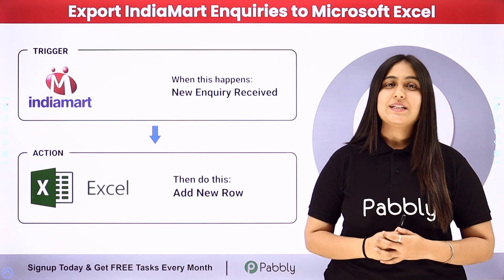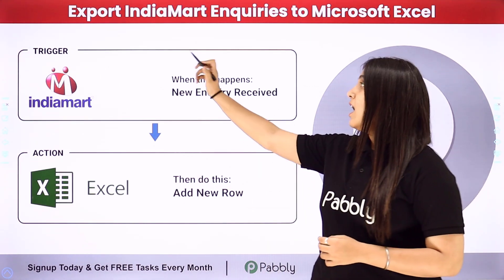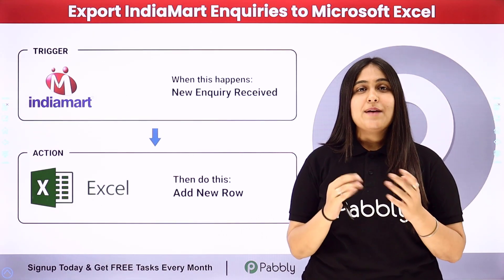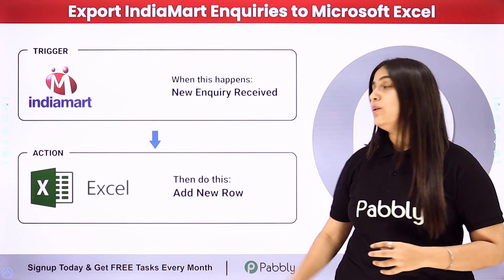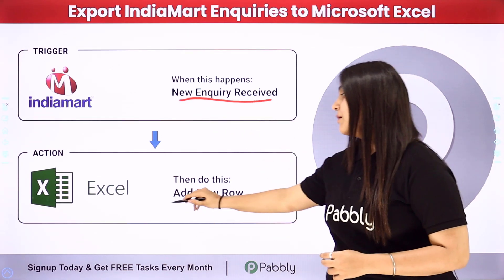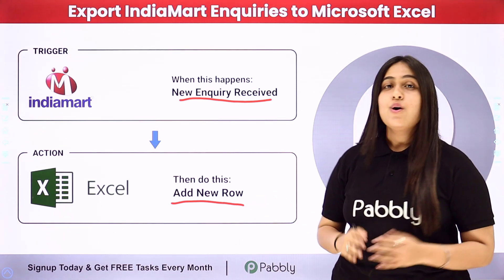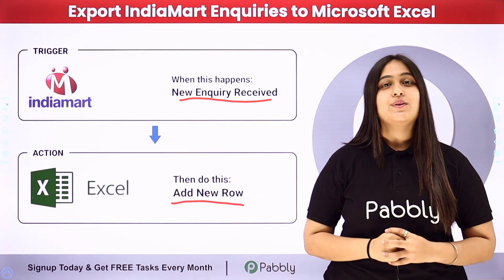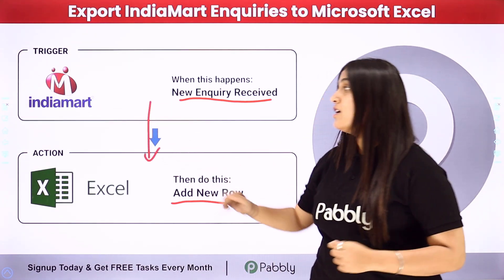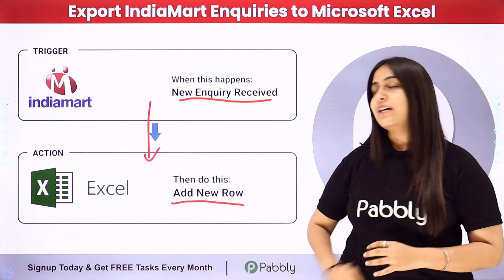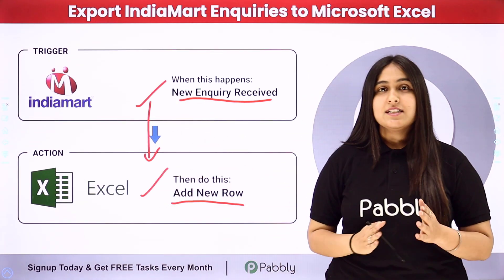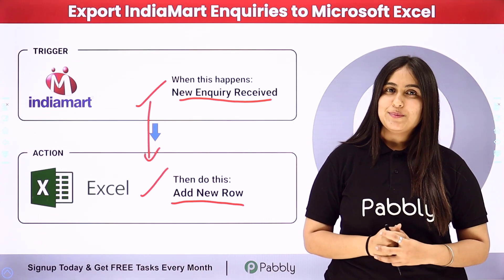Hello everyone, welcome back to Pabbly. In this video we are going to learn how to export India Mart inquiries to Microsoft Excel. I am a seller on India Mart and I want that whenever a new inquiry is received, it should automatically be added in my Microsoft Excel as a new row. To automate this process we will use an automation software named Pabbly Connect, in which we need to connect our trigger and our action. Our trigger application will be India Mart and our action application will be Microsoft Excel.